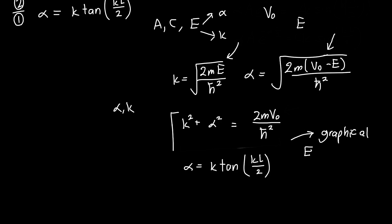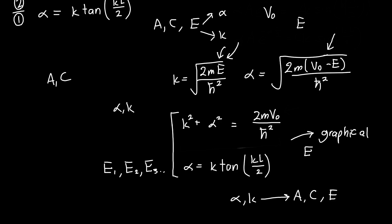With two equations in alpha and k, we can solve them independently and then go back and solve for the energy and coefficients A and C if needed. Once we know k, we know the energy directly. Often we're only interested in the energy eigenvalues — the ground state, second excited state, and so on. In the next video, we'll go over how to take these two equations and turn them into an intuitive solution that lets us make predictions about finite quantum wells and how they differ from infinite quantum wells.